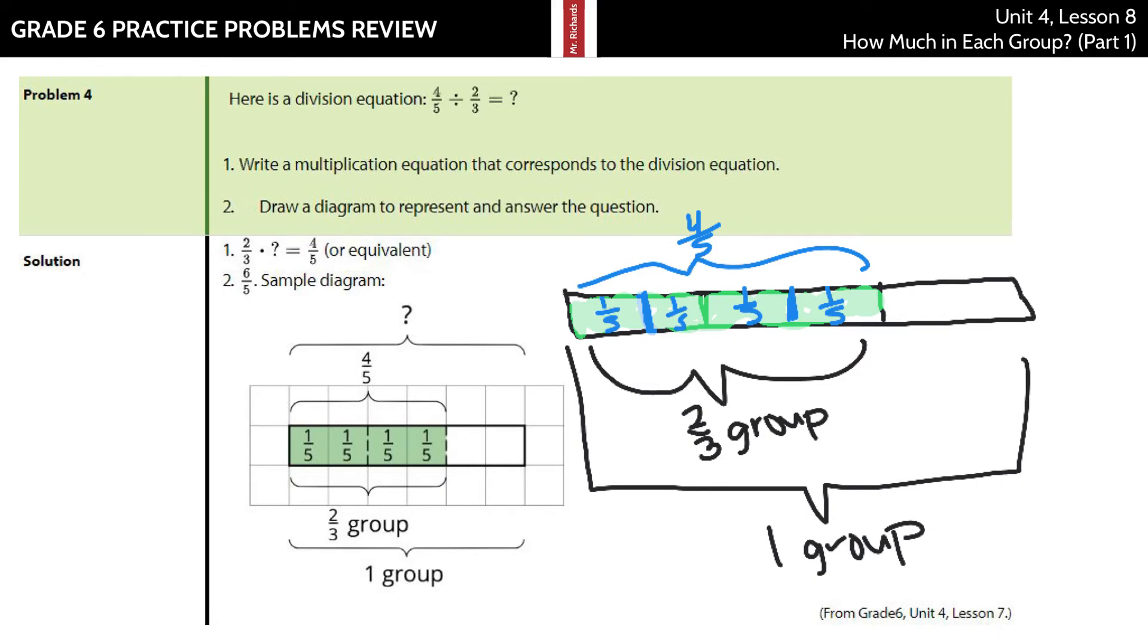Now, one-third is here with the two-fifths. Another third is here with two-fifths. So I actually need to do another two of these here for the entire group. And so what this is telling me now is that my four-fifths divided into the two-thirds is actually going to be one, two, three, four, five, six-fifths.